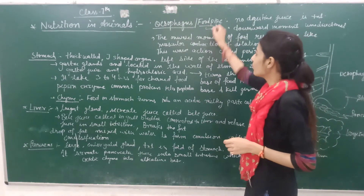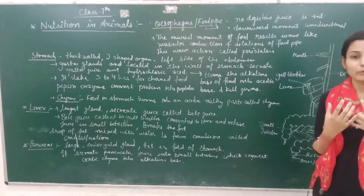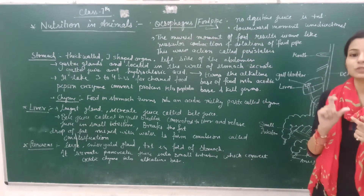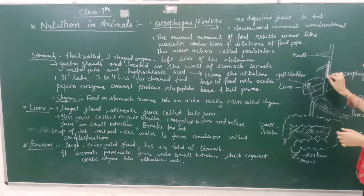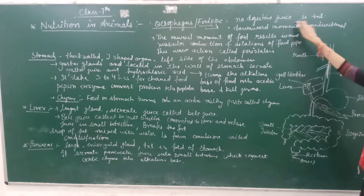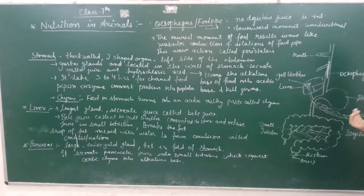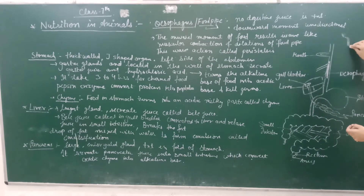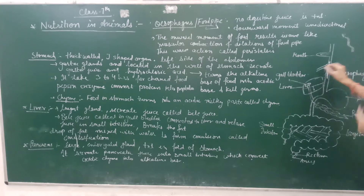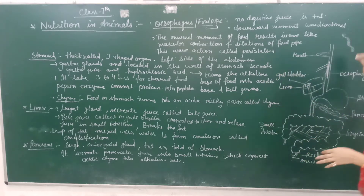The oesophagus is like a pipe. When we have food in the mouth, it is converted into a bolus. When it is converted, the bolus comes through a food pipe called the oesophagus. There is no digestive juice present in the oesophagus. It is a unidirectional downward movement. When the food moves downward, there are muscle contractions. This wave-like movement is called peristalsis.